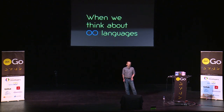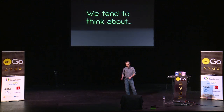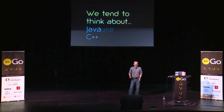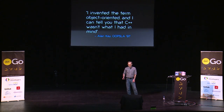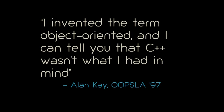When we think about OO languages, we tend to think about Java or C++, but this is a mistake. Alan Kay thinks it's a mistake. He said, "I invented the term object-oriented, and I can tell you that C++ wasn't what I had in mind."